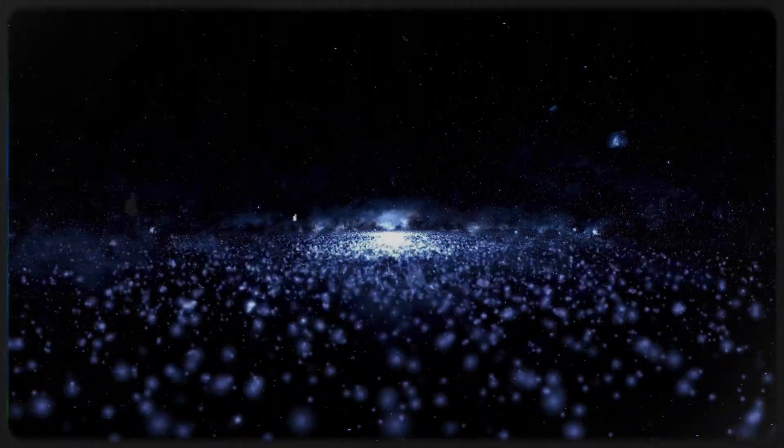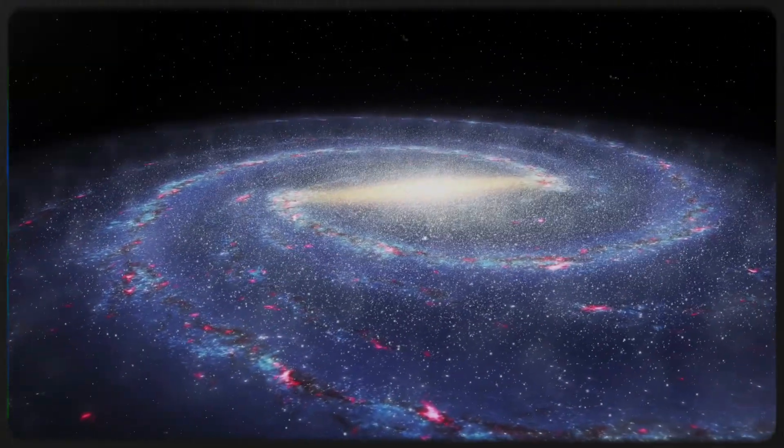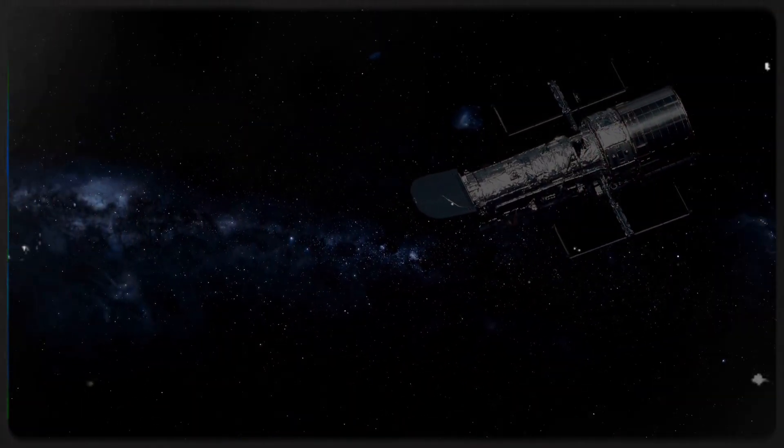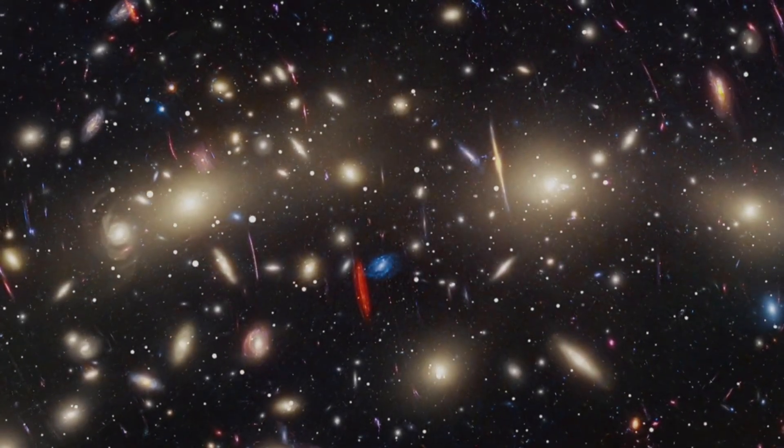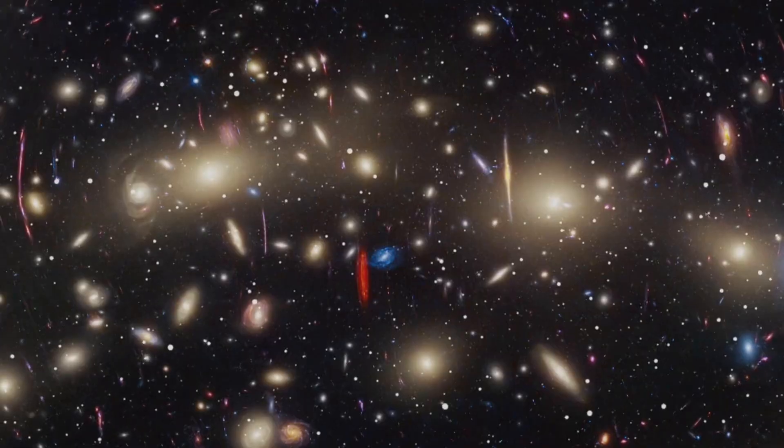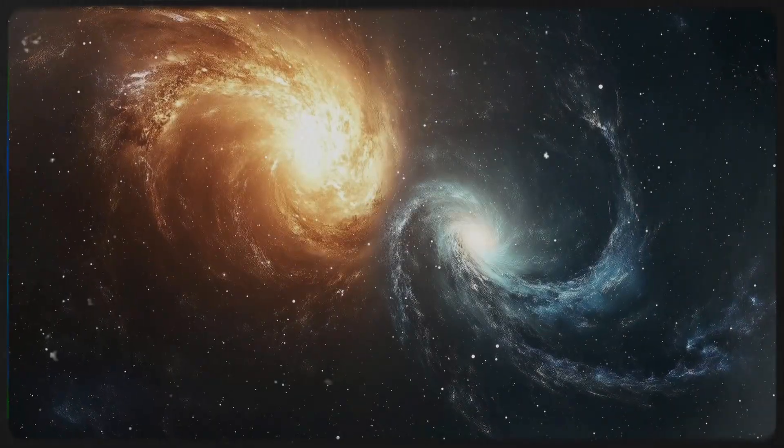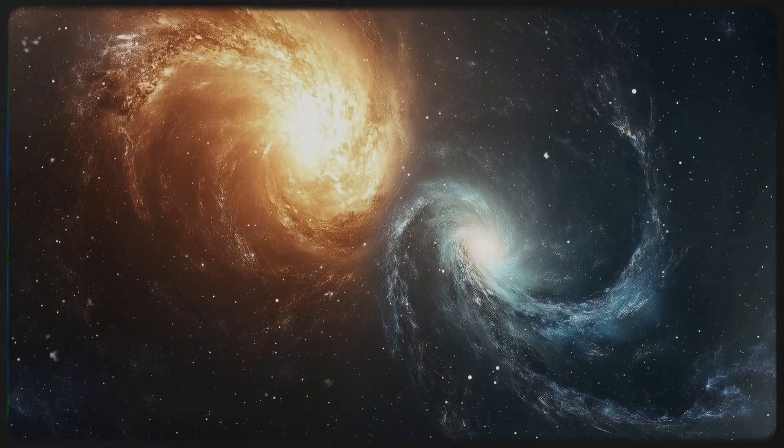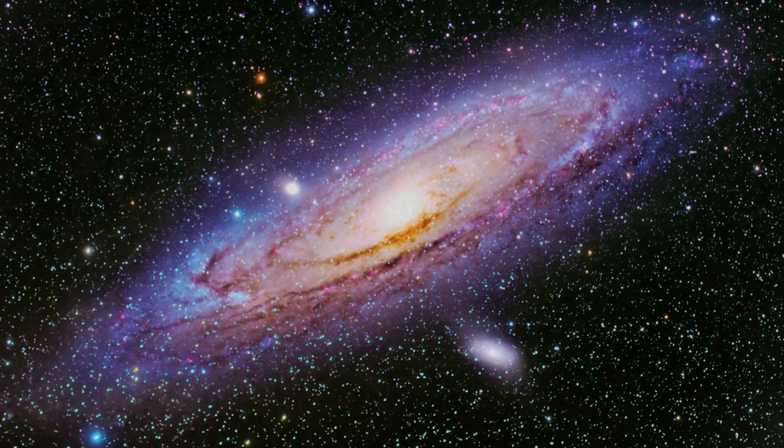This discovery challenges the long-held belief that galaxies like ours took billions of years to develop. Until now, astronomers thought barred spiral galaxies, such as the Milky Way, only emerged when the universe was much older. Even Hubble's observations suggested that barred galaxies were rare in the early cosmos. Yet, Webb has now provided evidence that turns these assumptions upside down. The fact that CEERS 2112 existed 11.7 billion years ago when the universe was just 15 percent of its current age suggests that galaxies like the Milky Way may have formed much earlier than we ever imagined. Galaxies usually evolve gradually over billions of years through mergers, collisions, and star formation, shaping their structure over time. But CEERS 2112's existence hints that this process might have taken place in under a billion years, far faster than previously believed.